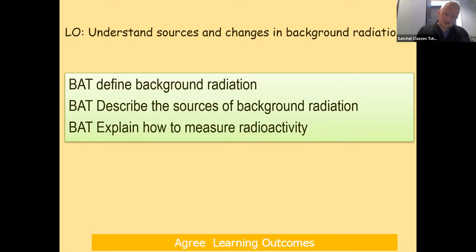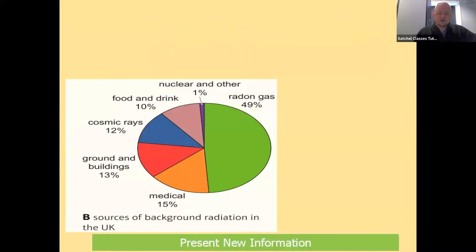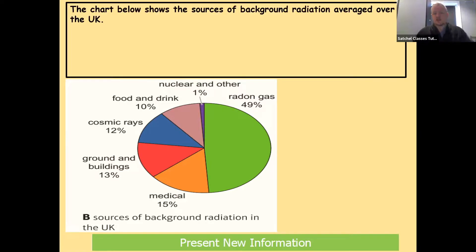So next, describe the sources of background radiation. You can see from the pie chart here that there are a number of different sources, and in the exams they do like to ask you questions using graphs or charts to see what you can elicit from them and how you can use those in your answer. The chart below shows the sources of background radiation averaged over the entirety of the UK.